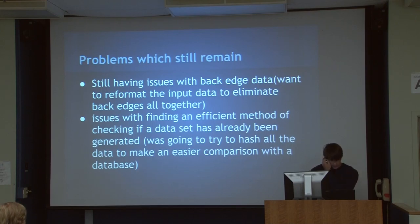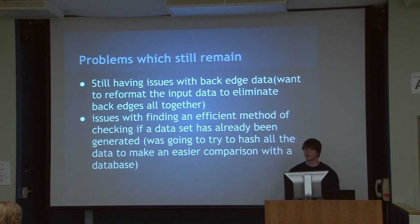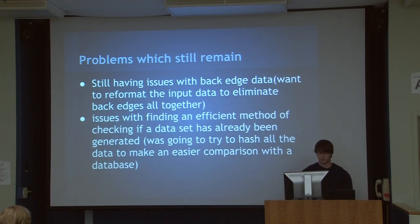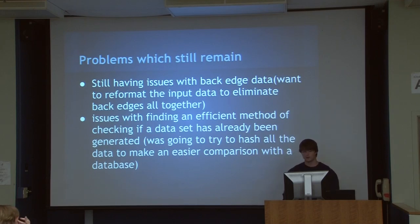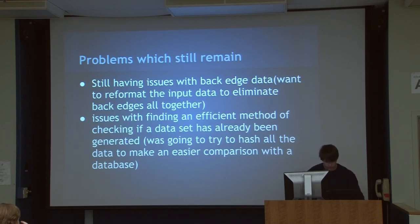For the back edge data, I want to change how the input works. Right now it creates another line from the node back to the original node. I want to find a way to traverse back through the graph without making it look more complicated. I was going to talk to the guys who made the 2D implementation to see if we can get the data exported in a better way.